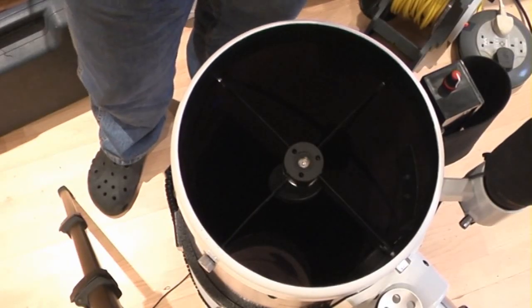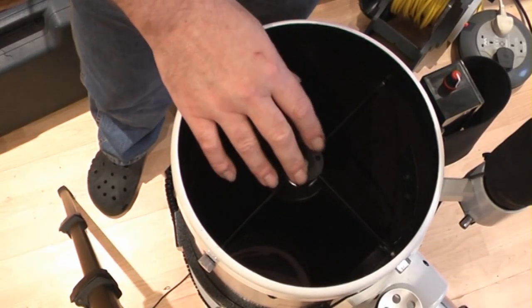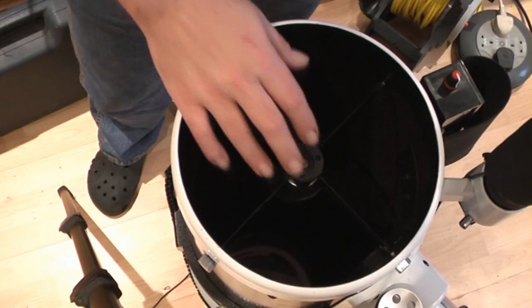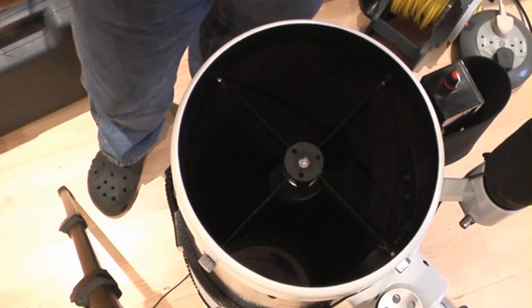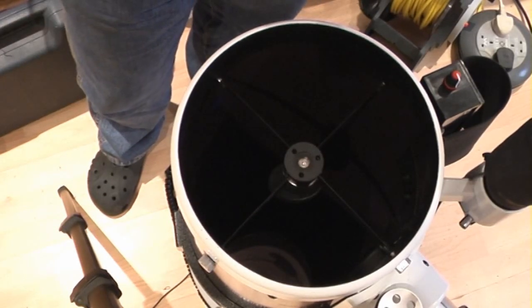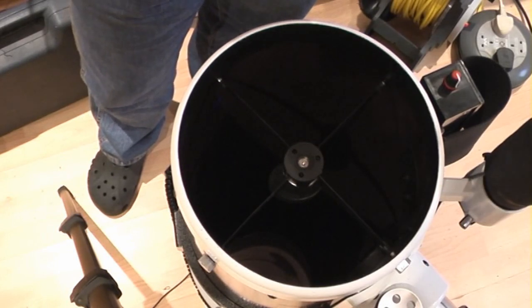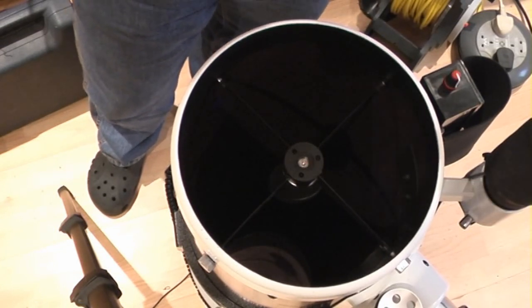We're going to break one of the golden rules here, and that is: if ever you're working on a part of your telescope like this, always have your scope on its mount or supported in a horizontal position, never vertically. Because if you drop anything down that scope, it's going to mark your primary mirror. This is just for filming sake—don't ever do it, don't think you've got really steady hands, because we all drop stuff.